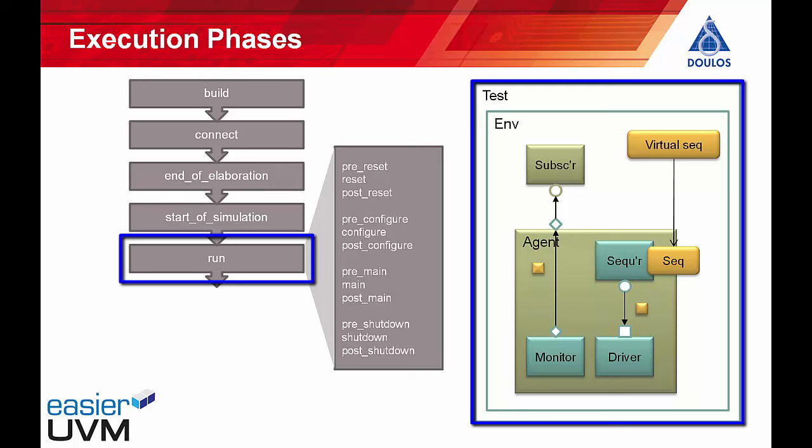The code in blue is provided by the user. Each time `do_drive` is called, it takes a field from the transaction object, uses it to wiggle a pin in the interface to the design under test, and then waits until the next clock edge. So the code from the easier UVM code generator is a mixture of standard boilerplate code and user-defined code fragments.